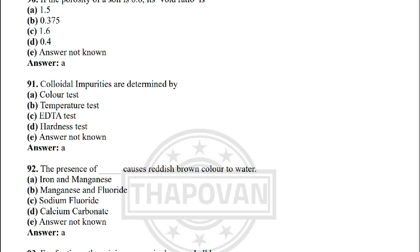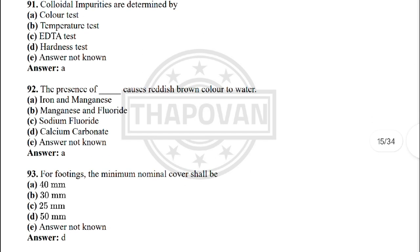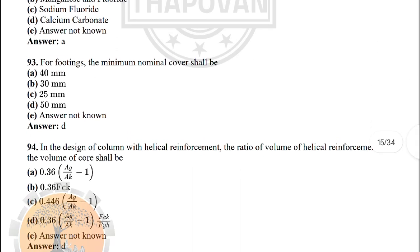Next: colloidal impurities are determined by — the correct answer is option A: colour test. Next: the presence of iron and manganese causes red or brown colour to the water — the correct answer is option A: iron and manganese.